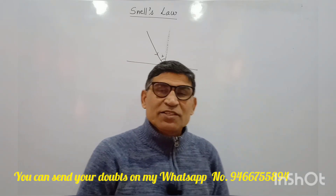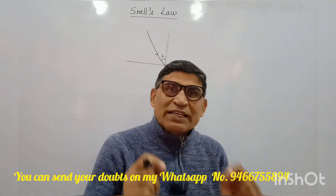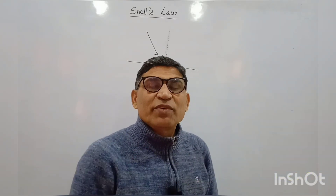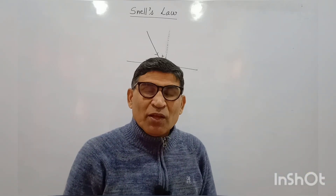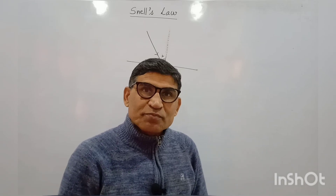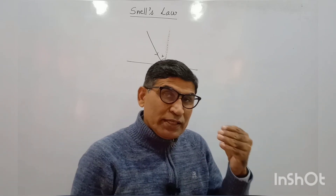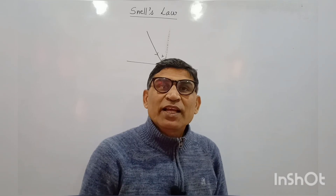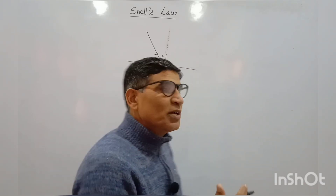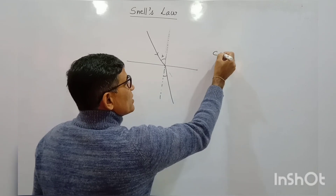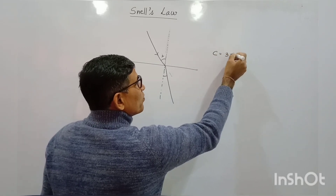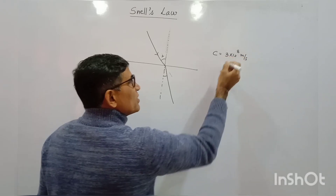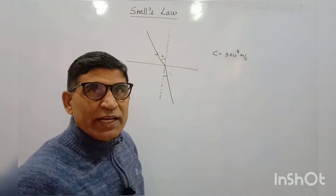To understand this law, first we should understand how light behaves when it passes through a medium. When light travels through a medium, there is a change in speed if the medium changes. The speed of light in vacuum is denoted by C — that is 3 × 10⁸ meters per second.